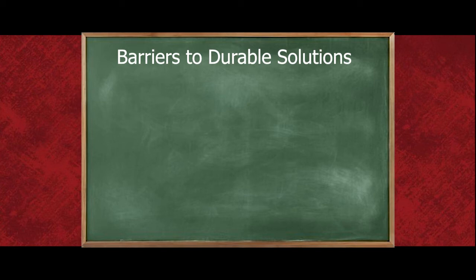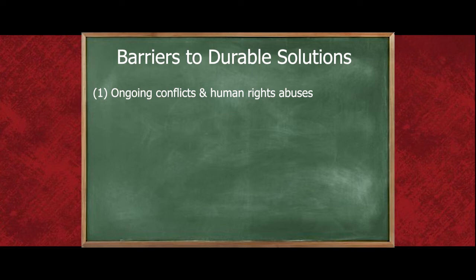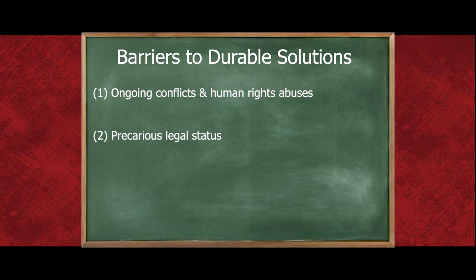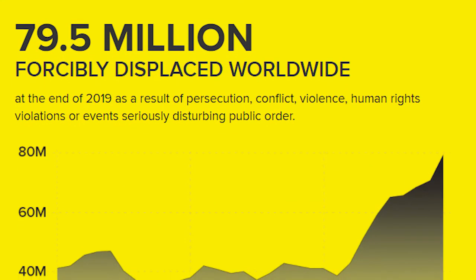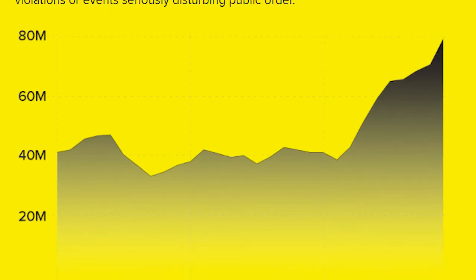There are several barriers to durable solutions. First, many refugees in camps today fled conflicts that remain ongoing, meaning that few people believe it's safe for them to return to their country of citizenship. Second, many refugees in camps lack formal legal status and often do not have the same rights to work and attend school as local citizens. This leaves them permanently marginalized in the country where they are located, which in turn creates additional barriers to local integration or resettlement. And third, there are far more refugees in camps who are in need of resettlement than there are placements offered. For example, in 2018, approximately 1.4 million refugees were identified as being especially vulnerable and in need of being permanently resettled. However, only 92,000 refugees were resettled in 2018, less than 7% of those awaiting resettlement. Given these limitations, it's not surprising that refugees are increasingly moving on their own to places where they feel safe and have an opportunity to integrate.